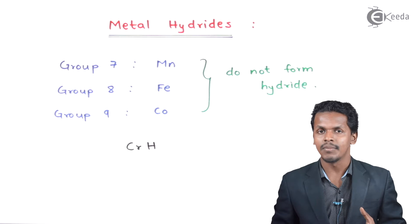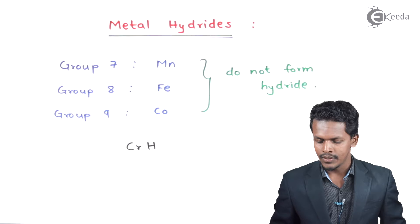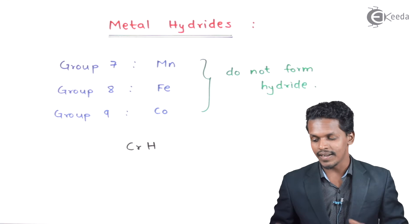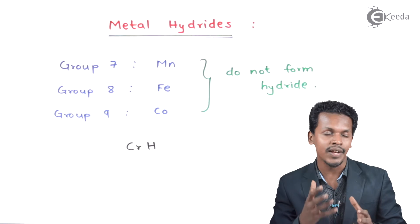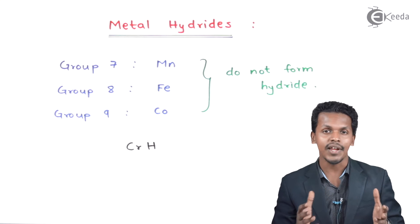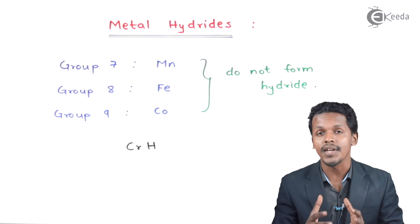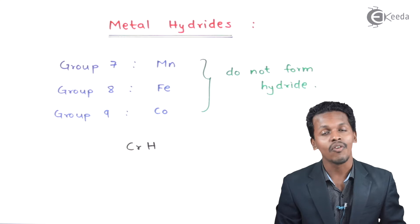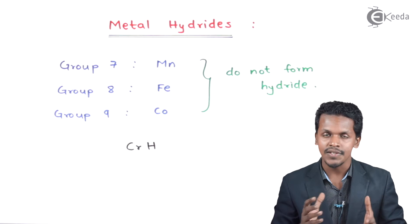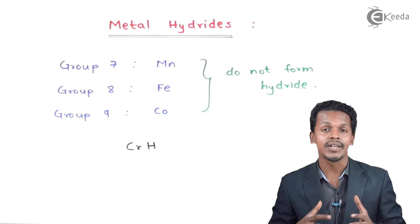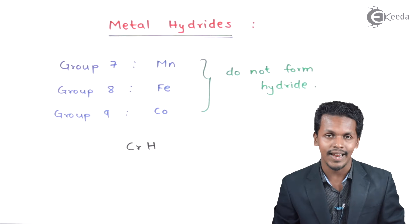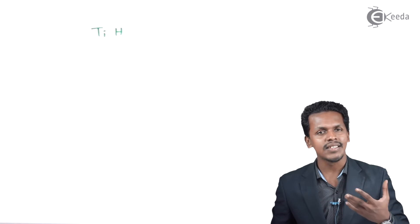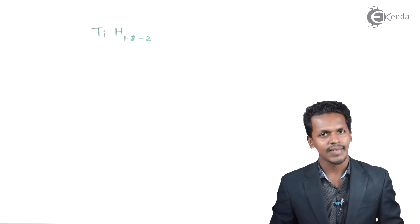Chromium can exhibit multiple oxidation states such as +1, +2, and so on. The hydrogens forming metal hydrates when bonded with D-block elements are not in stoichiometric proportions. That is why metal hydrates are also known as non-stoichiometric hydrides — they do not obey the law of multiple proportions, yet they are stable. For example, in titanium hydrate, titanium combines with hydrogen but the stoichiometry is somewhere between 1.8 and 2.